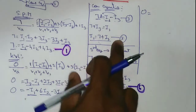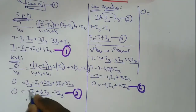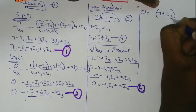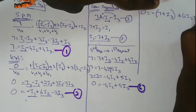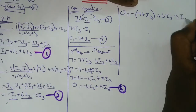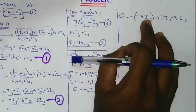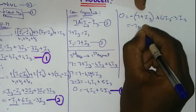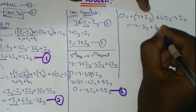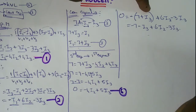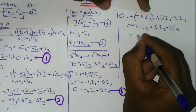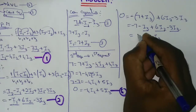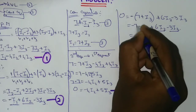Second equation: substitute I1 equals 7 plus I3. So 0 equals minus (7 plus I3) plus 6I2 minus 3I3. Substituting I1: 0 equals minus I3 plus 6I2 minus 3I3. Solving: minus I3 minus 3I3 equals minus 4I3, so 6I2 minus 4I3 equals 7.